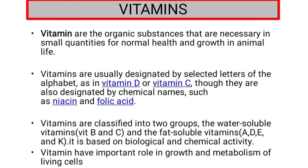Vitamins have an important role in the growth and metabolism of living cells. They are classified into two groups: water-soluble vitamins and fat-soluble vitamins. Water-soluble vitamins include vitamin B and C. Fat-soluble vitamins are vitamin A, D, E and vitamin K. This classification is based on the biological and chemical activity.